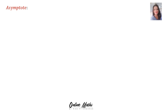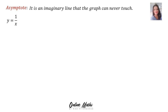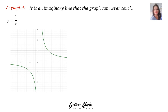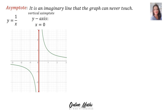Another important feature of a hyperbola is something we call an asymptote. An asymptote is the imaginary line that the graph can never touch or intersect. For y equal to 1 over x, there is a vertical asymptote — that is the y-axis — and its equation is x is equal to 0. The horizontal asymptote is the x-axis.